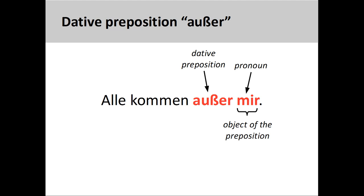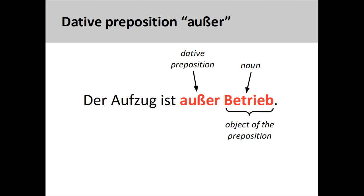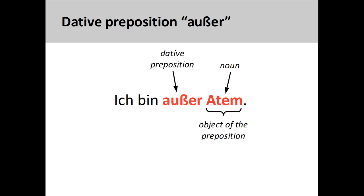The preposition außer can be used to express exclusion or an exception, as in alle kommen außer mir — everyone is coming except me. The preposition can also be used idiomatically to express the concept of being out of something. For example, der Aufzug ist außer Betrieb — the elevator is out of order. And, ich bin außer Atem — I am out of breath.